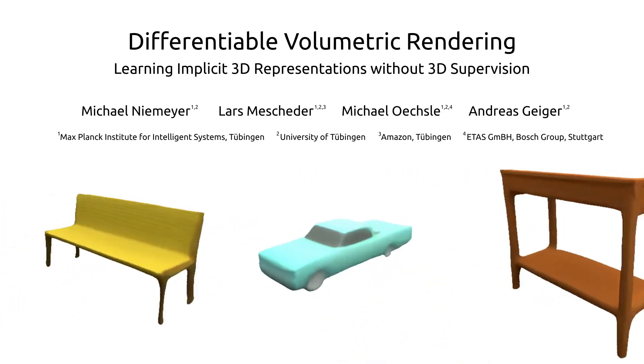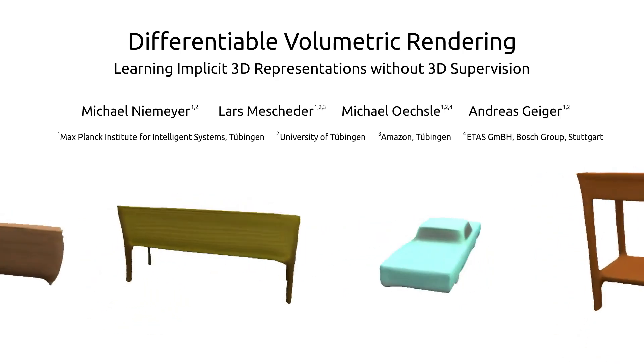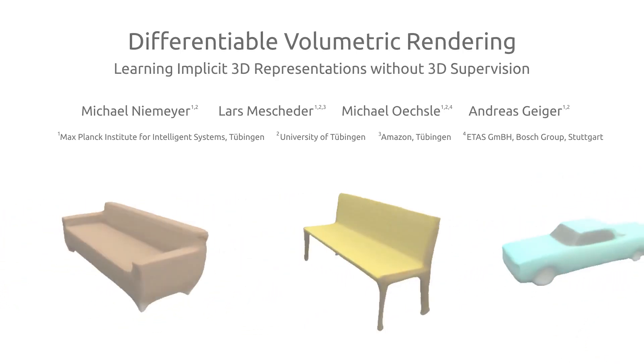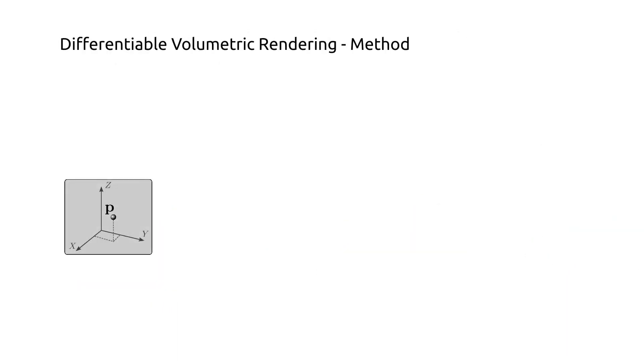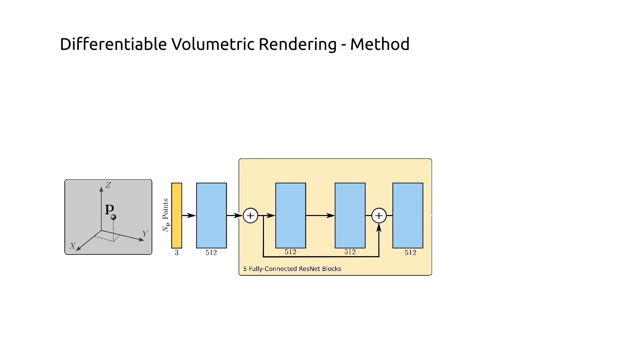In DVR, we represent the shape and texture of an object with an implicit neural representation. More specifically, we can take any point in 3D space and pass this through our fully connected neural network to predict an occupancy probability as well as an RGB color value.